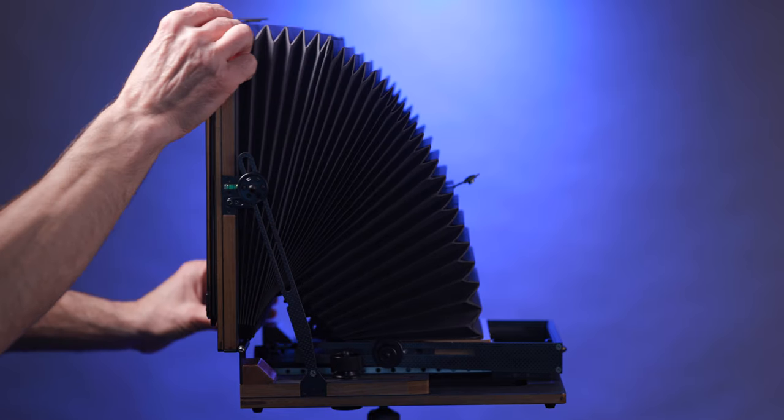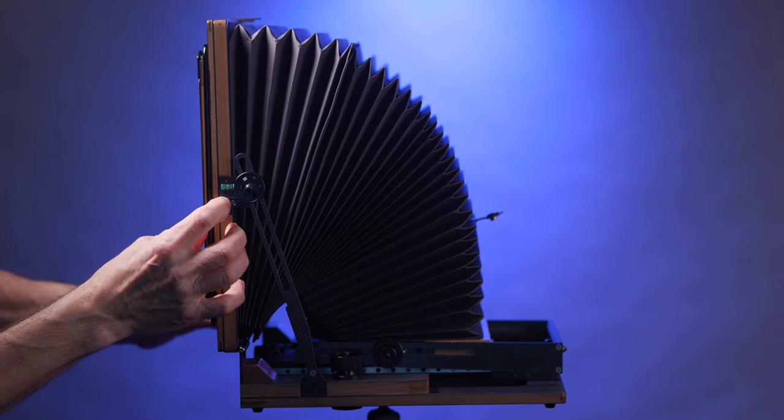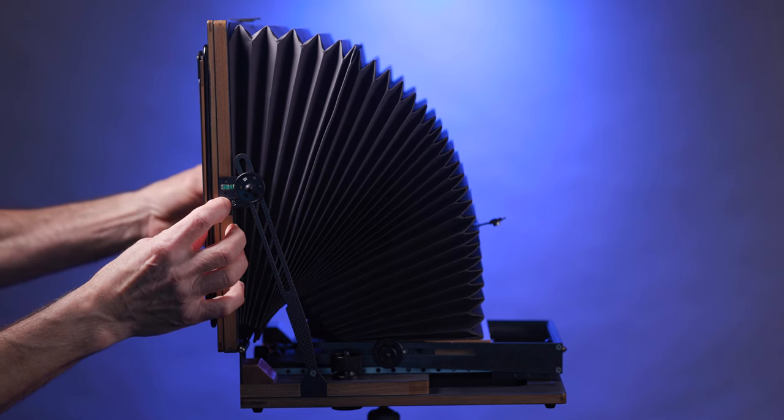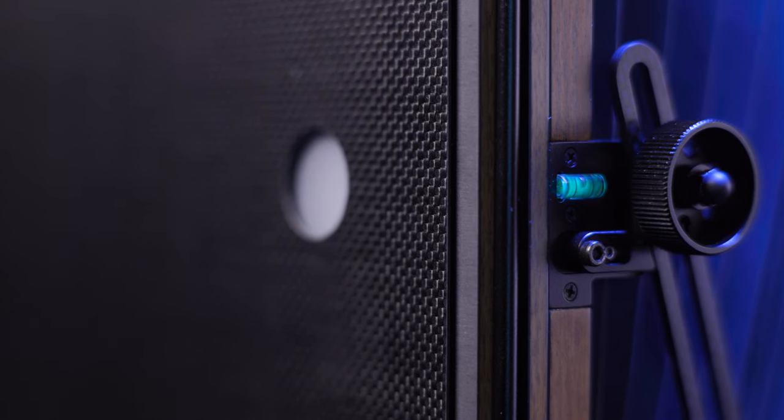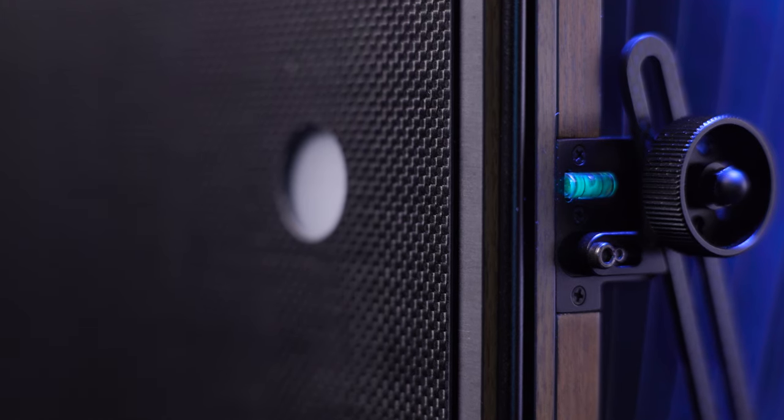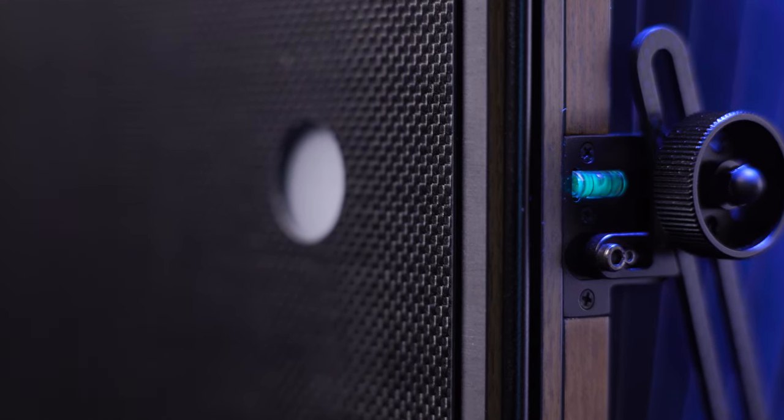The rear standard gets even more intricate and interesting. As I mentioned earlier, the rear standard automatically defaults to the 90 degree position because of the sliding locks. Just above these mechanisms are bubble levels to help adjust the positioning of the rear standard on a horizontal plane.